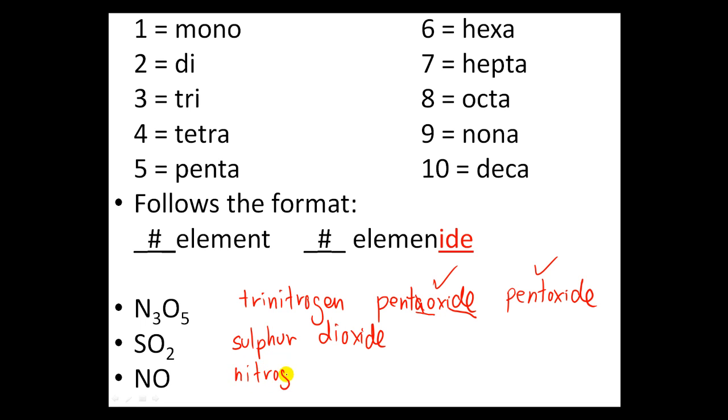Next one, NO. Nitrogen. Since there's only one nitrogen, I just leave it as that. I don't say mononitrogen. There's only one oxygen, so I write oxide. But I know there's only one, so I have to write monoxide. Monoxide, not monooxide.